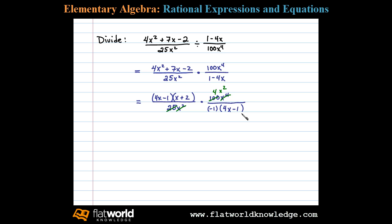And we're left with 4x squared times x plus 2 in the numerator and negative 1 in the denominator. Now we can write that with negative 1 in the numerator: negative 4x squared times x plus 2.